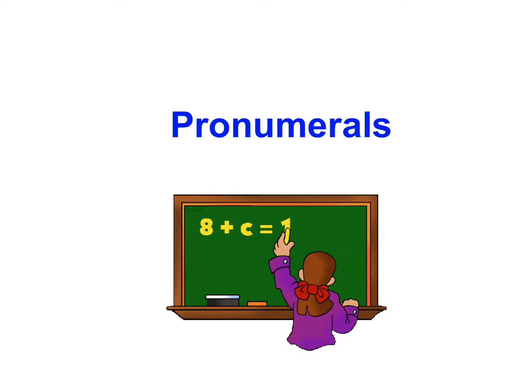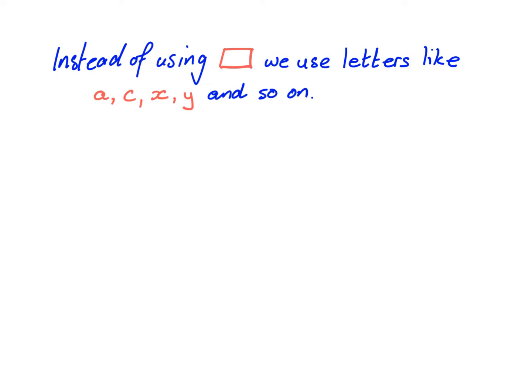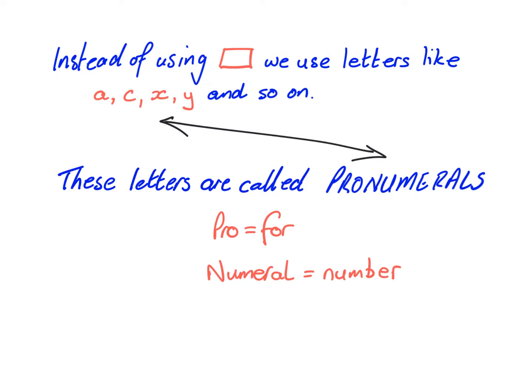In this video we're going to be looking at pronumerals. As this picture shows, we have a letter that can represent a number — letters represent numbers. In the past we've used a box, like 'something plus four equals nine,' but now instead of a box we use letters: a, b, c, x, y, z. These letters are called pronumerals. 'Pro' means 'for' and 'numeral' means number, so pronumerals stand for numbers.